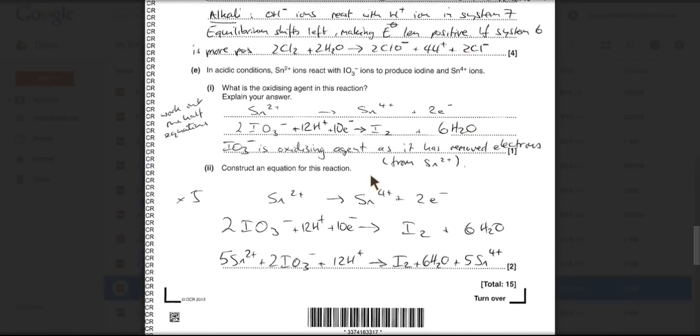Final part of the question, in acidic conditions, so there's nothing in the table above now. We've just got to work it out from the information. In acidic conditions, tin 2 plus ions react with IO3 minus ions to produce iodine and SN4 plus. Well, I've gone a bit further than you needed to, but it'll help actually in the bottom part of the question. I've worked out the half equations for these two statements.